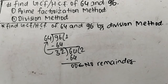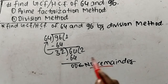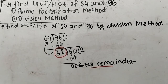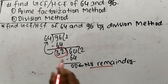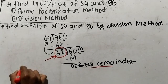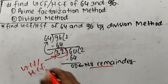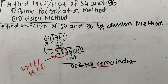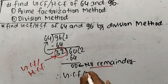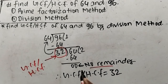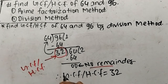In the division method, when there is no remainder, the divisor which gives no remainder becomes the GCF or HCF. So 32 is giving no remainder, therefore 32 becomes the GCF or HCF. We can write that GCF or HCF is equal to 32. In this way we can find out GCF or HCF by division method.